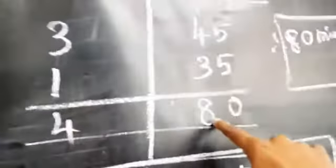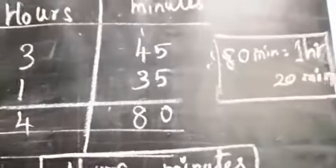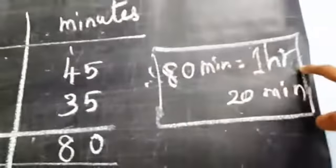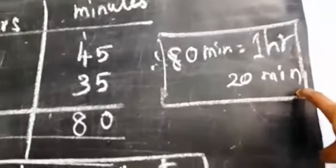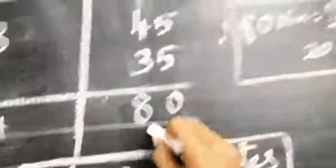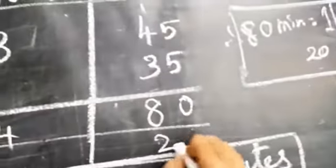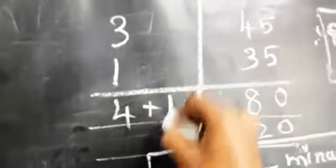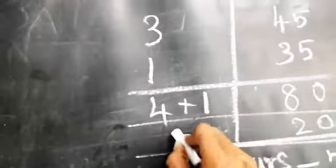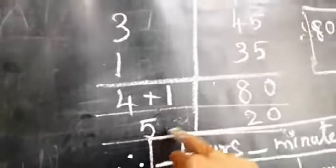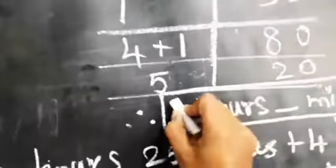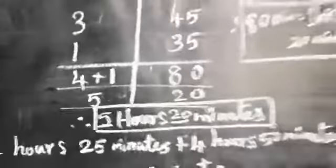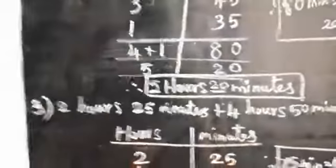We get 80 minutes, which equals 1 hour 20 minutes. Write 20 minutes and carry 1 hour. Now add the hours: 3 plus 1 equals 4, plus the carried 1 equals 5. So the answer is 5 hours 20 minutes.